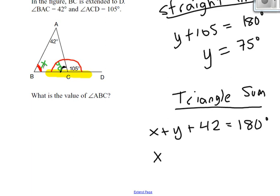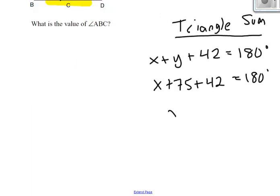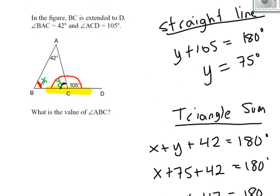Now I know what Y is. Y is 75, so I can substitute that in and solve for X. 42 plus 75 is 117. Then subtract 117. 180 minus 117 is 63 degrees. So I solved for X and communicated my logic.